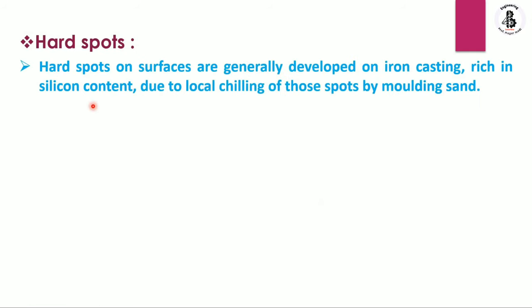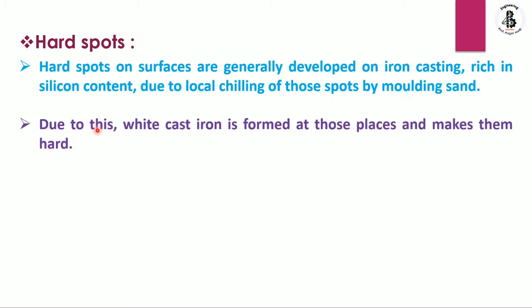Next are hard spots. Hard spots on the surface are generally developed in iron castings rich in silicon content, due to local chilling of those spots by the molding sand. Because of this, white cast iron is formed at those places, making them hard — generating hard spots on those particular surfaces.